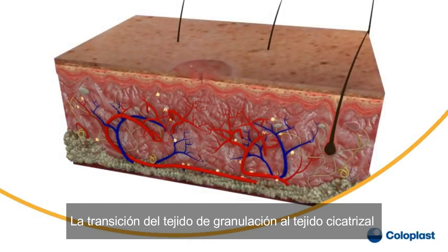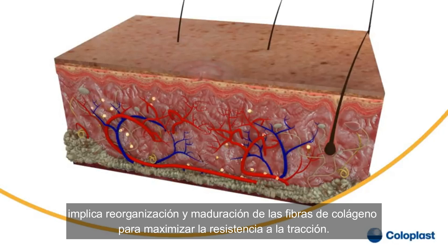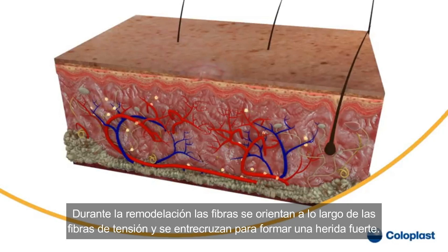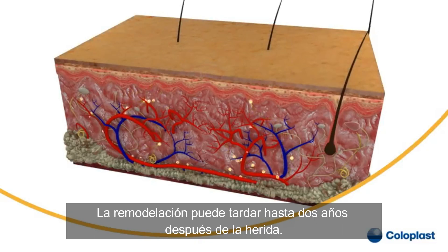The transition from granulation tissue to scar tissue involves reorganization and maturation of collagen fibers to maximize tensile strength. During remodeling, the fibers are orientated along the lines of tension and cross-linked to form a strong wound. Remodeling can take up to two years after wounding.